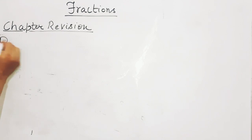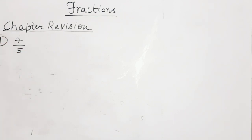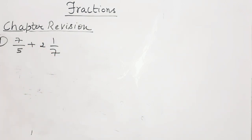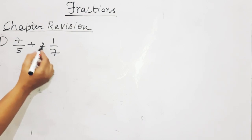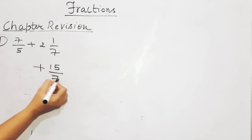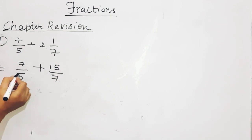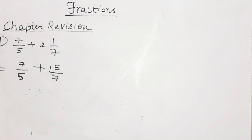Question number 4 is also based on addition of fractions: 7 upon 5 plus 2 whole 1 upon 7. Since 2 whole 1 upon 7 is a mixed fraction, our first step is to convert it to an improper fraction: 7 twos are 14, 14 plus 1 = 15, so it becomes 15 upon 7. Now we have 7 upon 5 plus 15 upon 7. What type of numbers are 5 and 7?